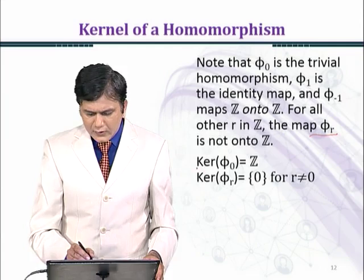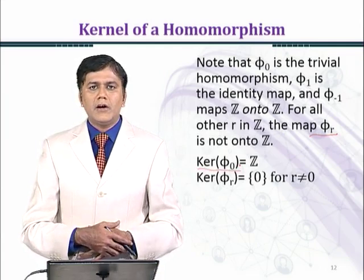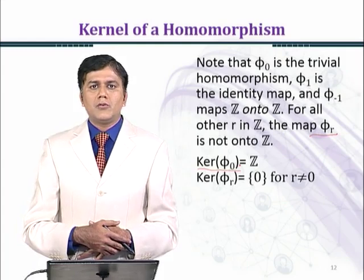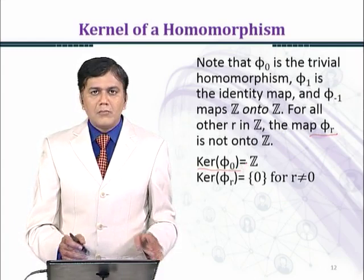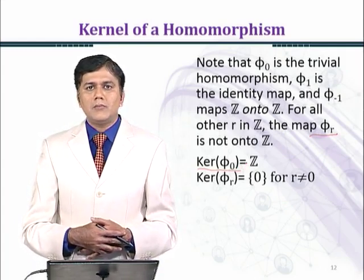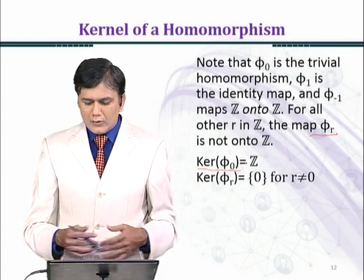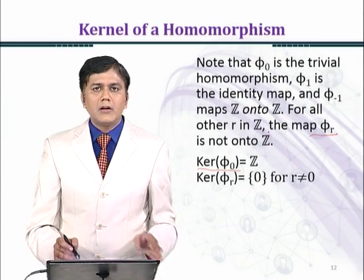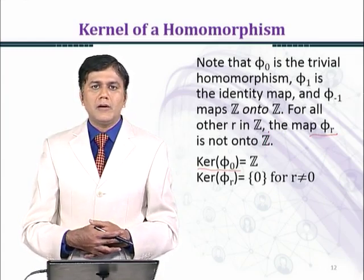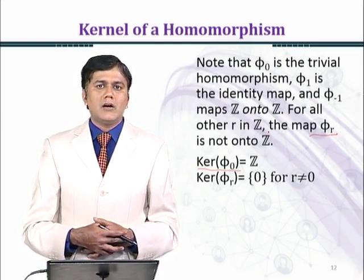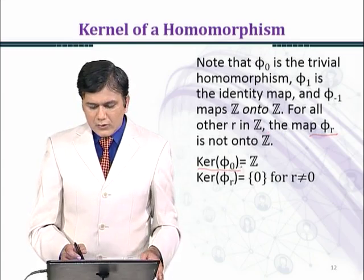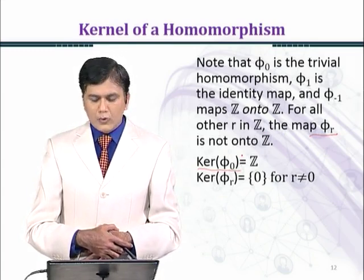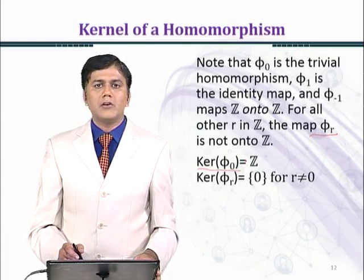Now we find the kernel of φ_0. Since φ_0(n) = 0·n = 0 for all n, and the kernel is defined as the set of all elements mapping to the identity element of the codomain — here Z under addition, whose additive identity is 0 — the entire set Z maps to 0 under φ_0. Therefore, the kernel of φ_0 equals Z.